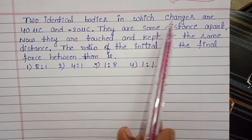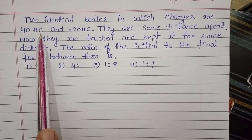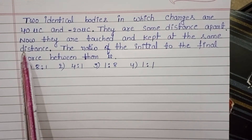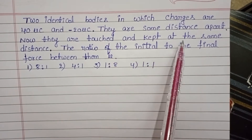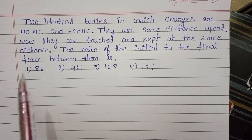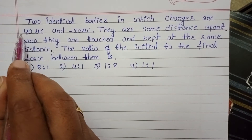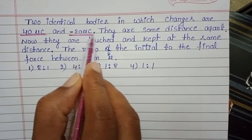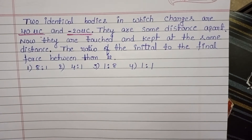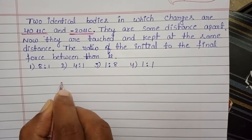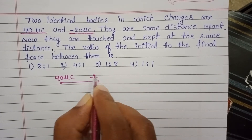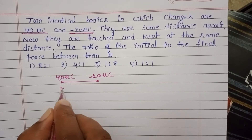Two identical bodies have charges of 40 microcoulombs and minus 20 microcoulombs. They are some distance apart. Initially, these two charges are separated by a distance r.